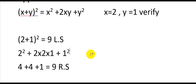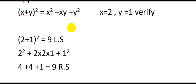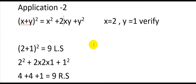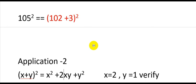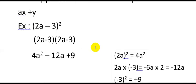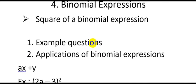Sometimes the examiner can change the terms — instead of 2xy they might write 3xy, so the whole value changes and the expansion is incorrect. You can then mention that the expansion is incorrect. That is another type of application under square of binomial expressions.